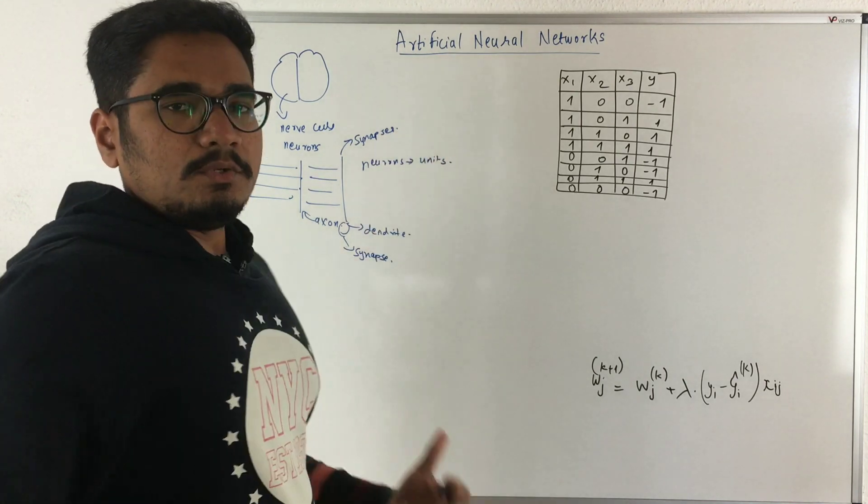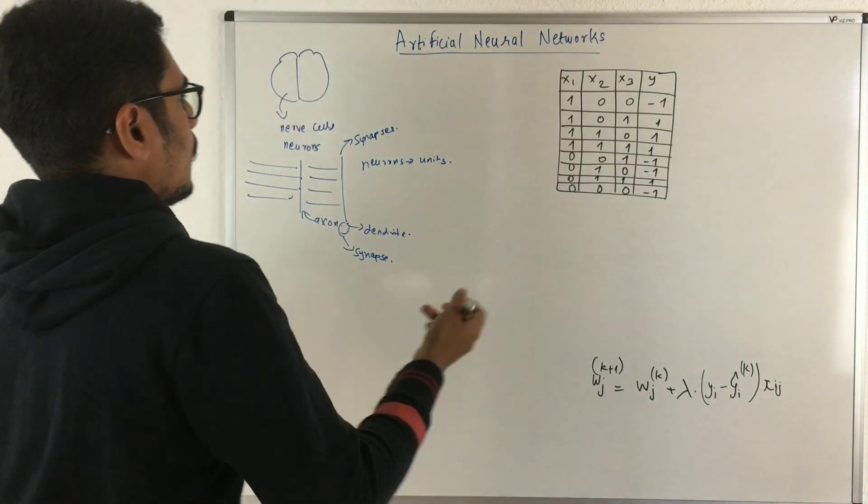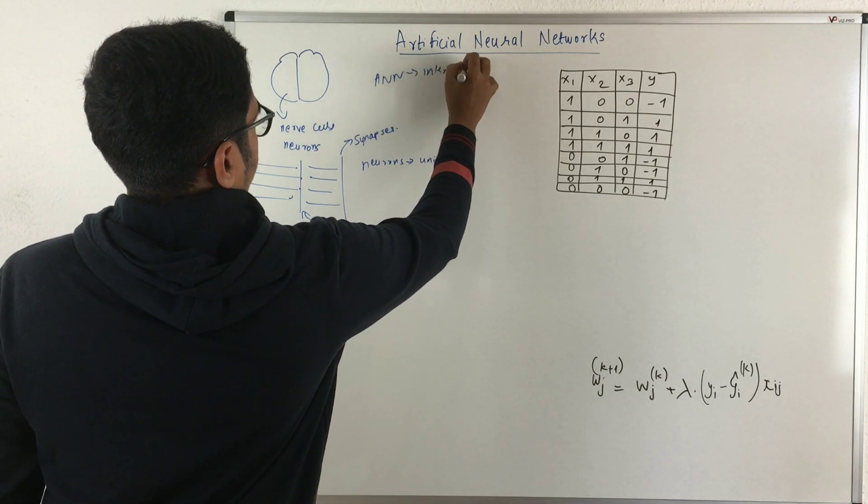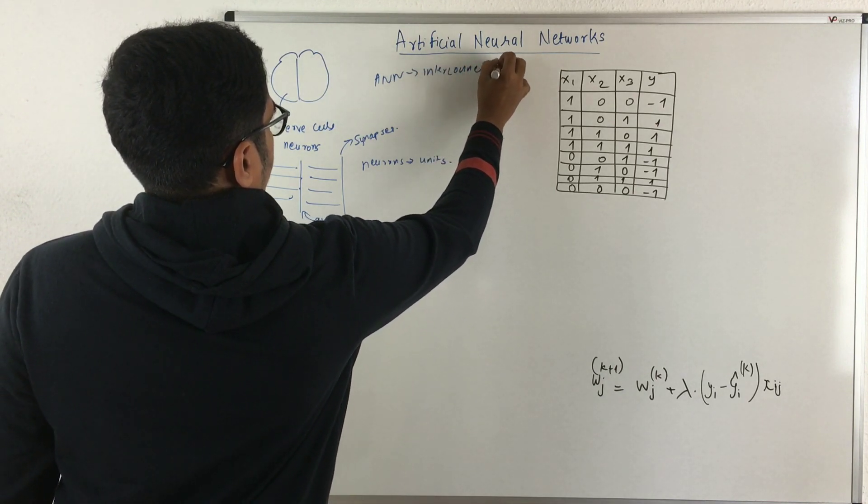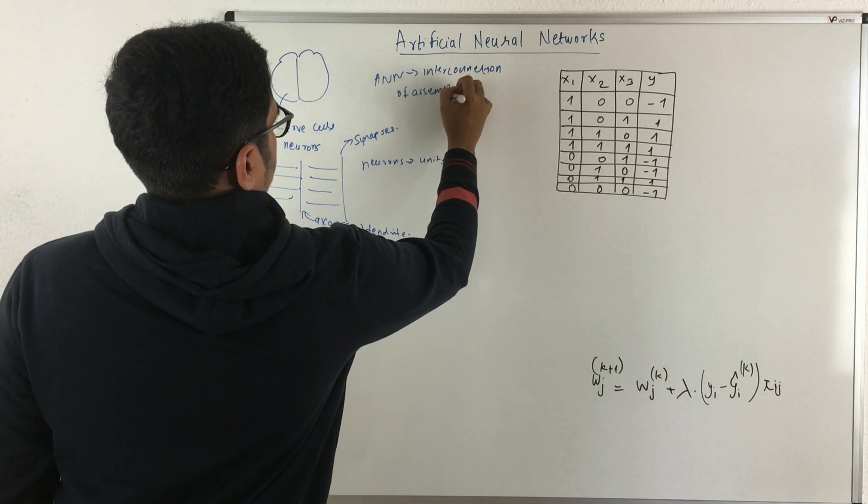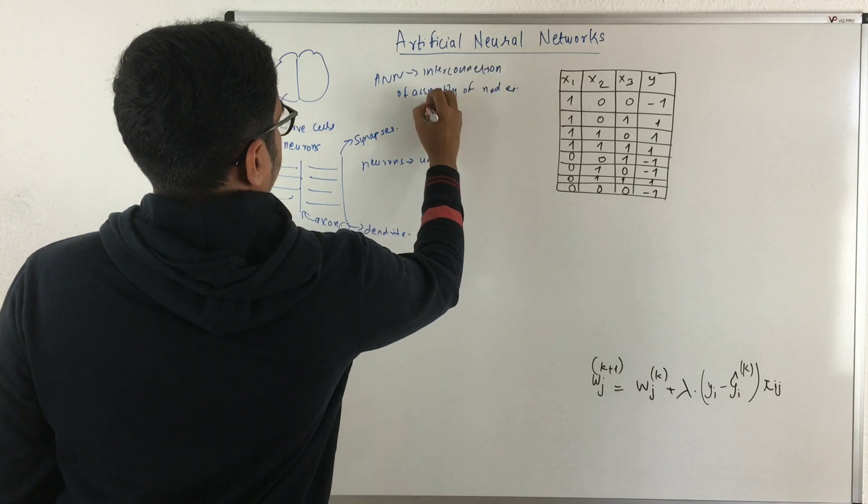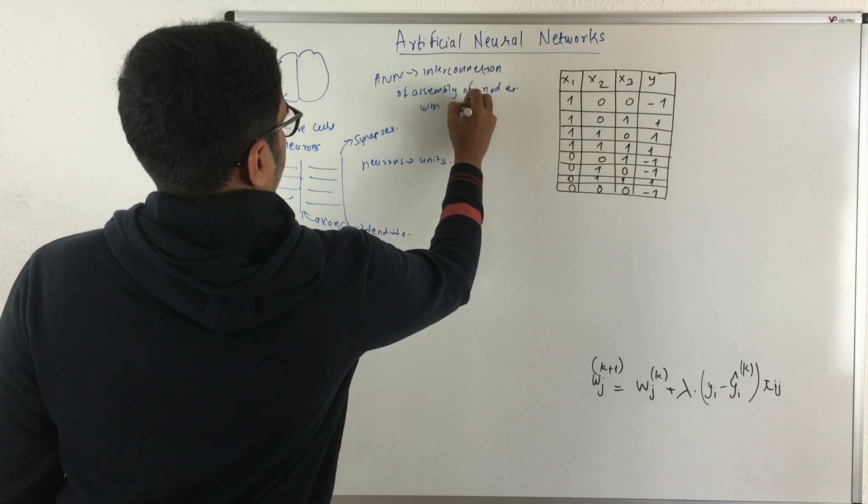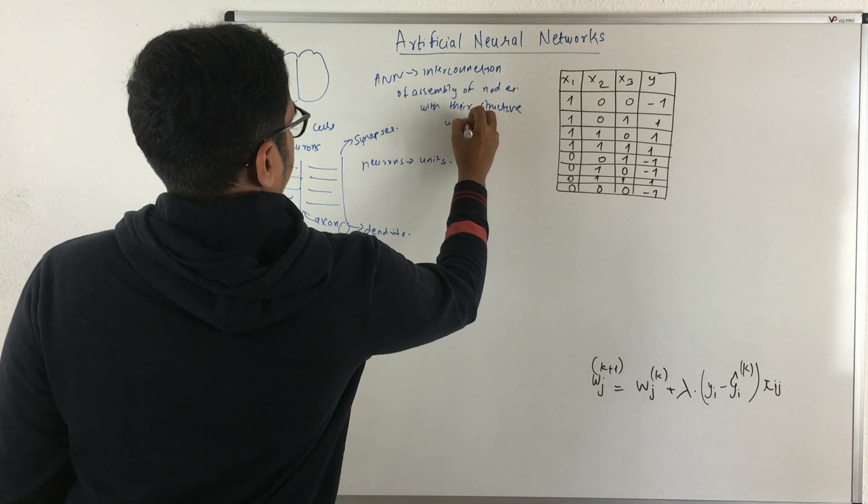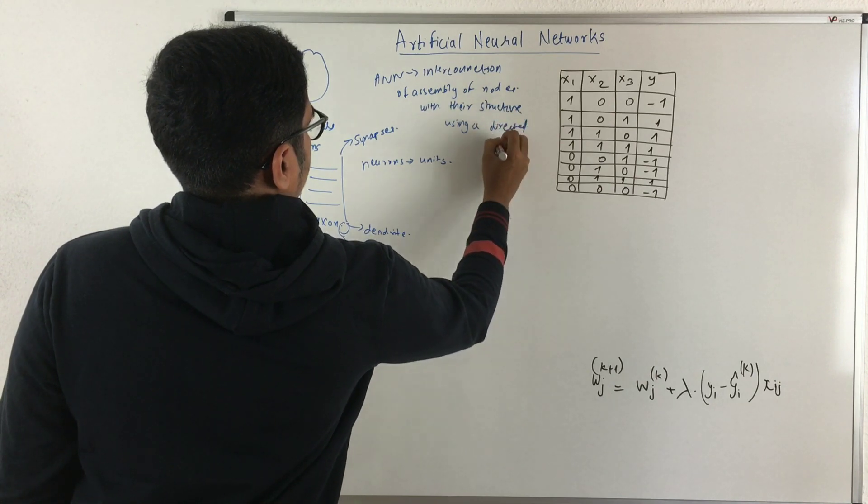In artificial neural networks, we'll be using the term nodes or units. Artificial neural networks essentially is the interconnection of assembly of nodes of different types with their structure using a directed link.